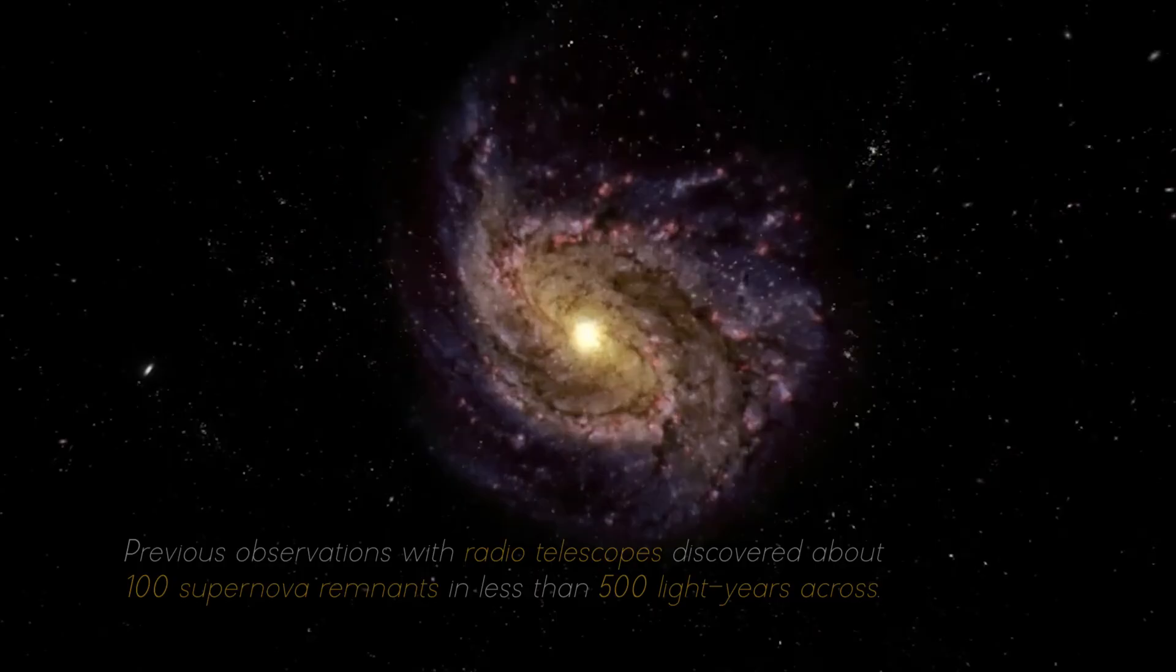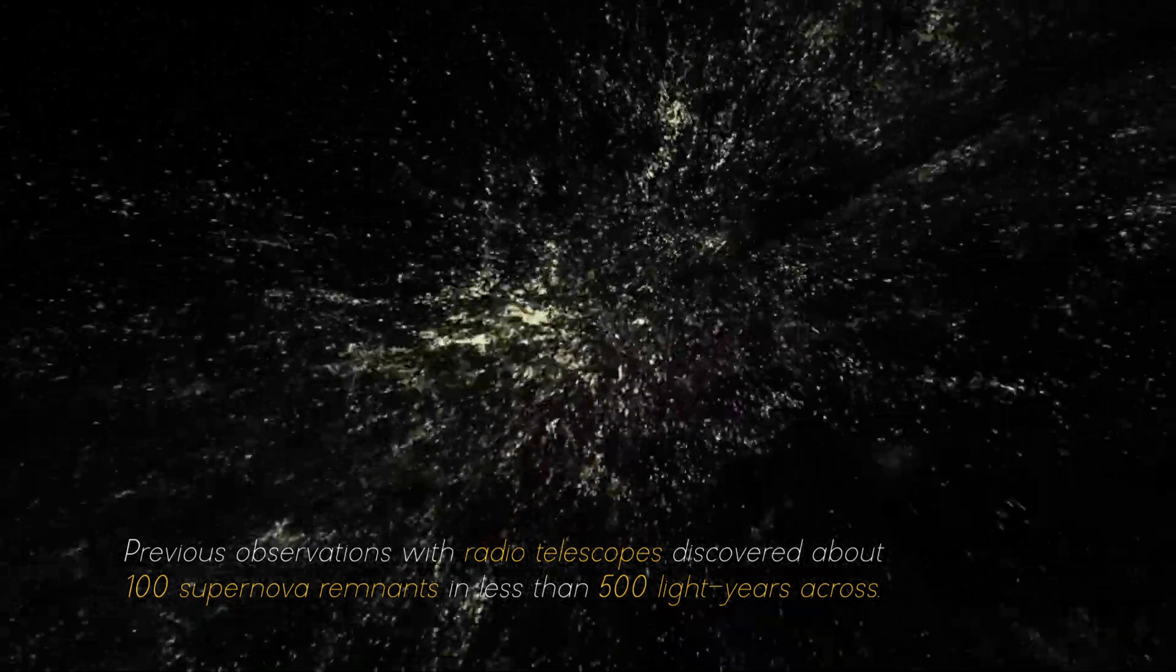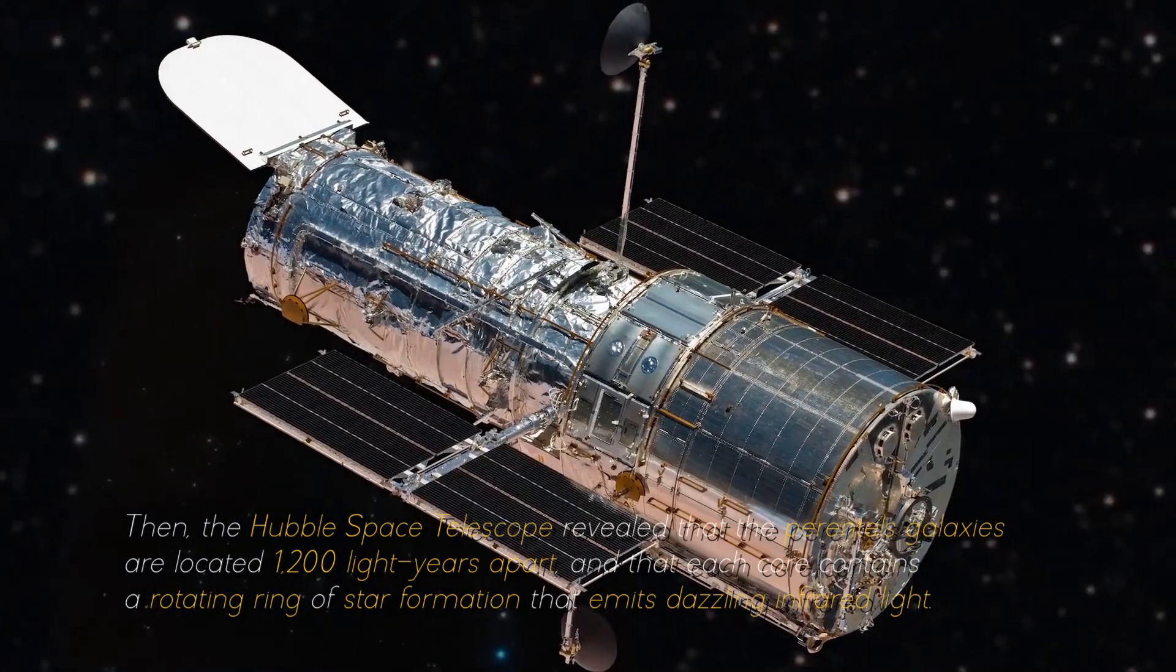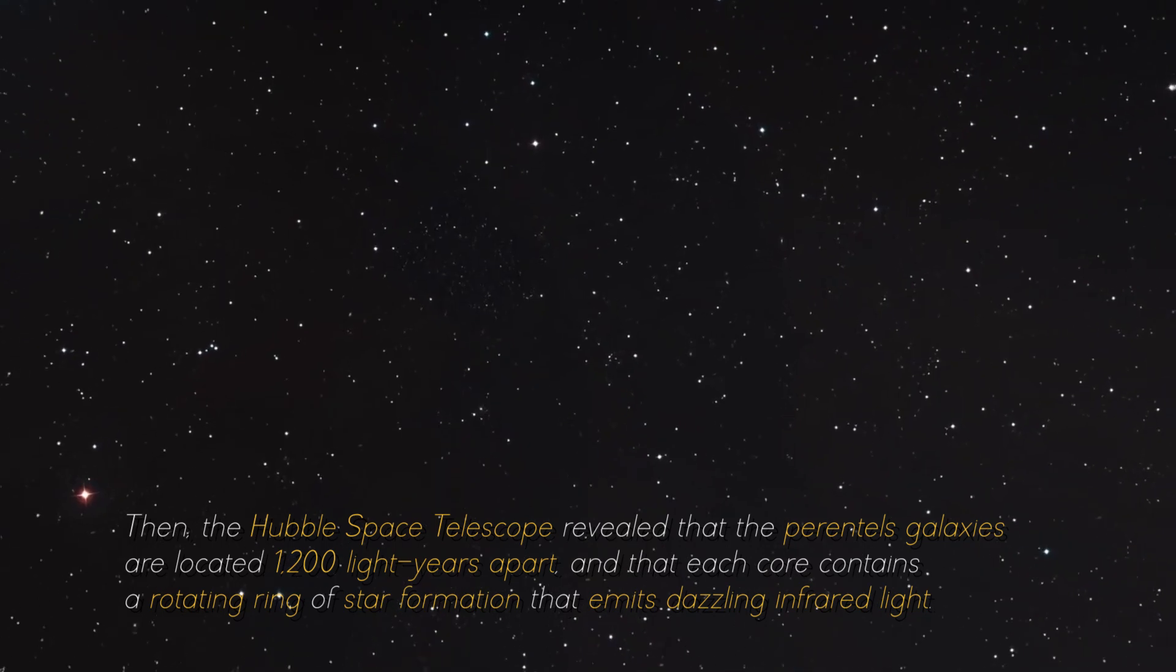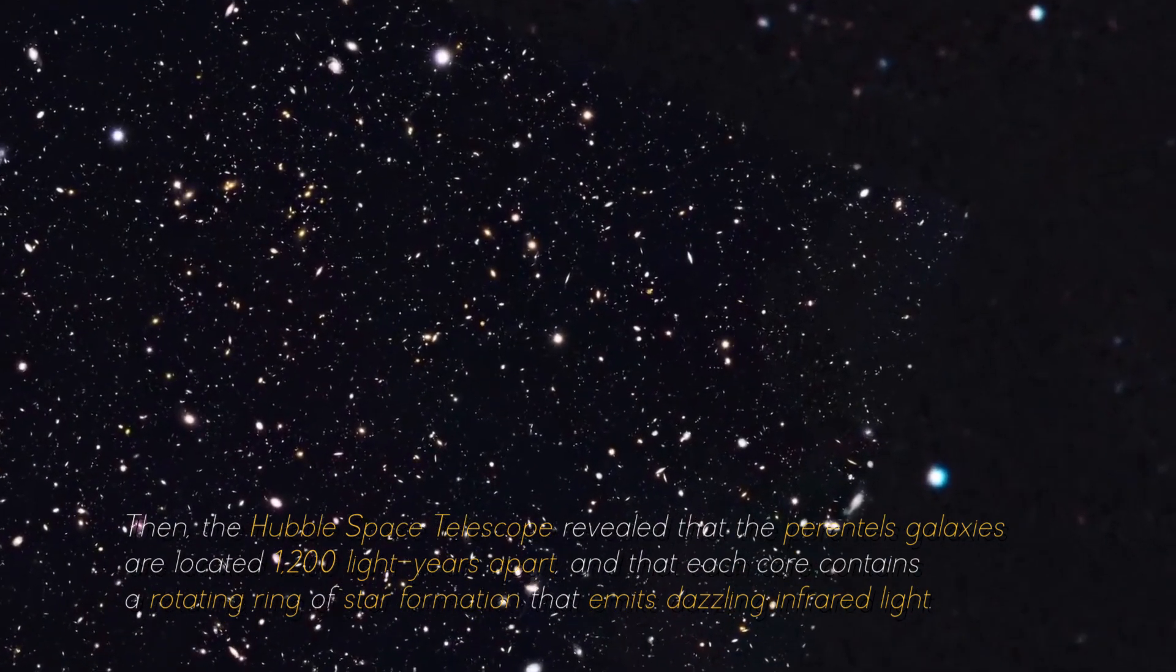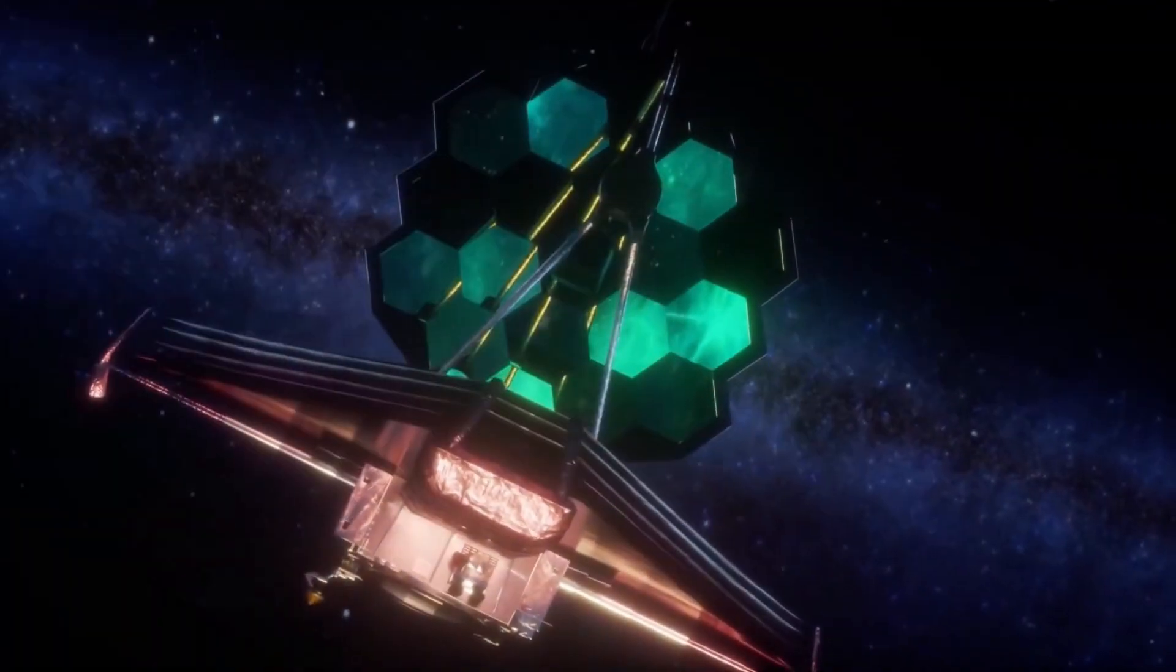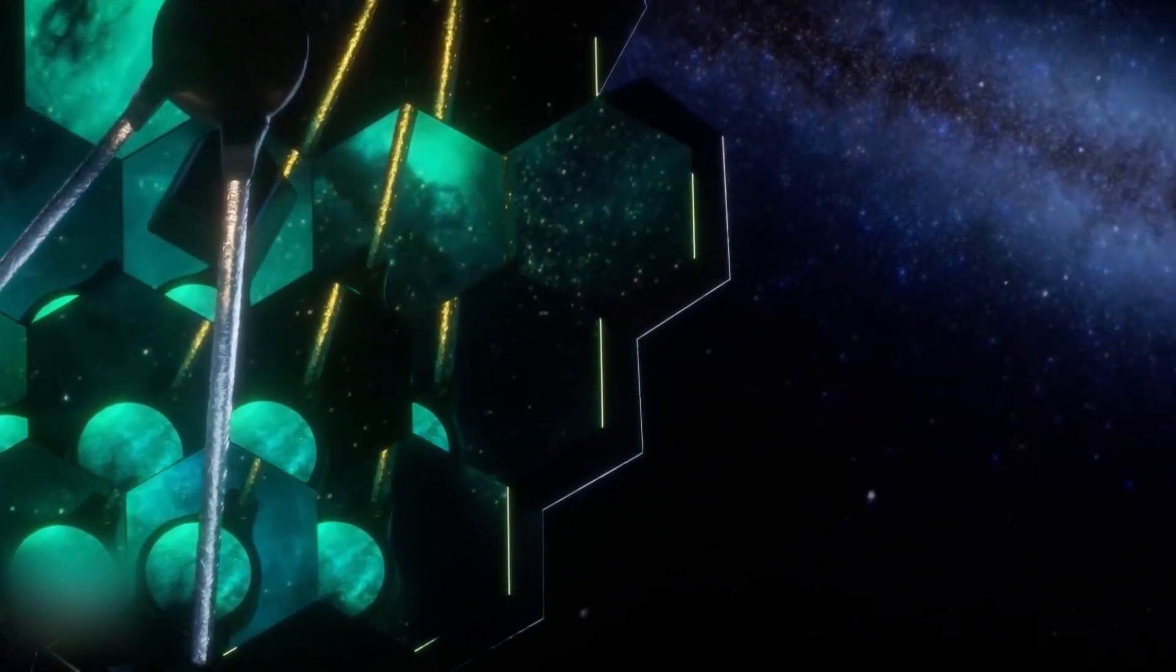Surprisingly, this small area contains as much gas as the entire Milky Way. Previous observations with radio telescopes discovered about 100 supernova remnants in less than 500 light-years across. Then, the Hubble Space Telescope revealed that the parental galaxies are located 1,200 light-years apart, and that each core contains a rotating ring of star formation that emits dazzling infrared light. This latest view from the James Webb Space Telescope shows an impressive galactic merger of the two galaxies.